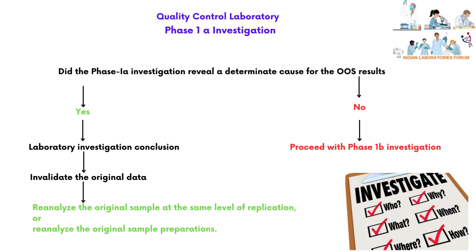Based on review of data in Phase 1a: if Phase 1a investigation reveals a determinate cause for the OOS results, the laboratory investigation should be concluded. The lab has to invalidate the original results, then reanalyze the original sample at the same level of replication, or reanalyze the original sample preparations. If Phase 1a investigation does not reveal the determinate cause, proceed with Phase 1b investigation.